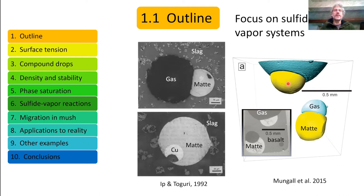Talk about phase saturation briefly because it has some bearing on the importance of compound drops and the way that they behave. The reactions between the sulfide and the vapor phase as these compound drops pass through magmatic systems. And then we'll talk for a little bit of how these things can migrate through magmas that are not completely liquid.